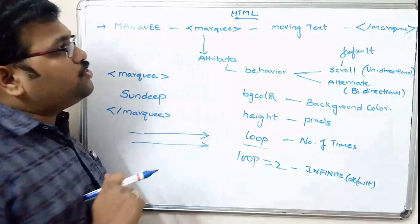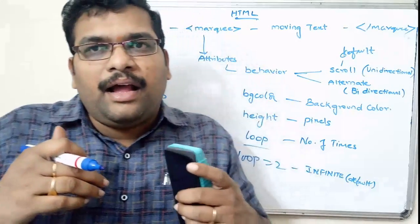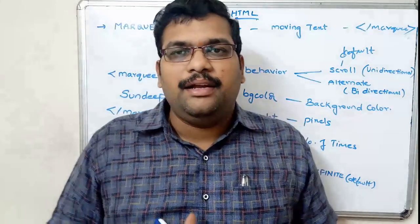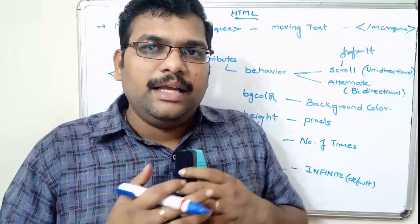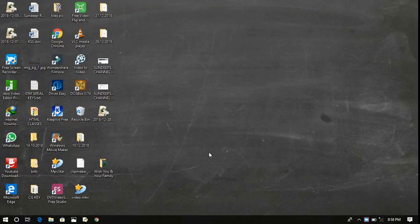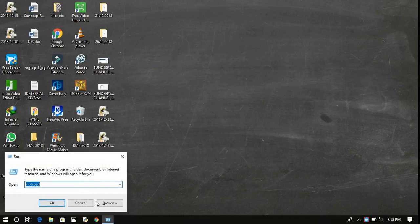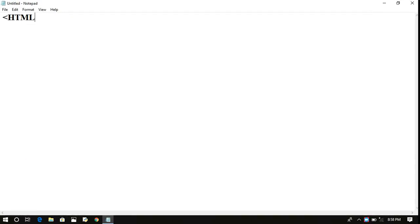Hope you understood these three tags — image tag, anchor tag for hyperlinks, and marquee tag. Now let us see the implementation of all three tags. Let us start with the image tag. As we know, everything has to be written in between the HTML tags.